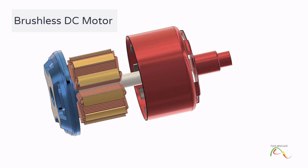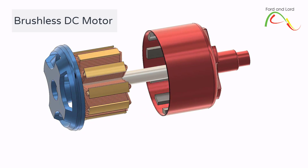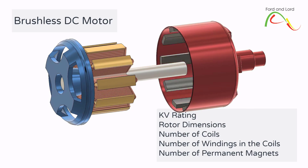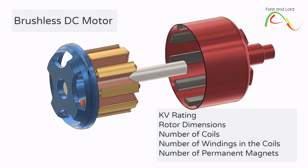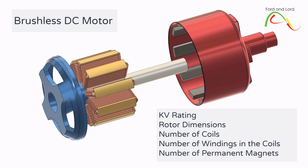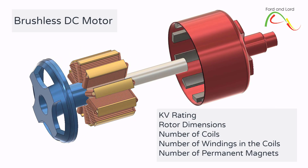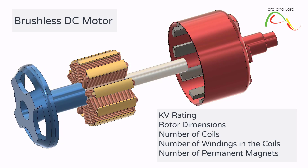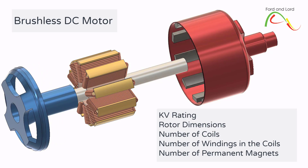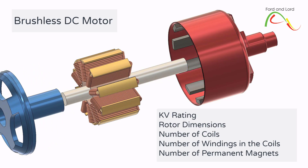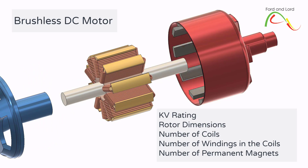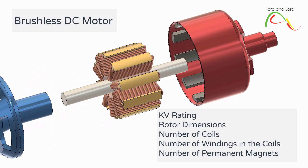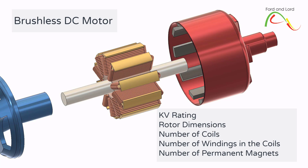Some of the very common terminologies in the multi-rotor drone industry are the KV rating, rotor dimensions, the number of coils, and the number of copper wire windings in the coils. It is important to understand how they affect the performance of a brushless DC motor.